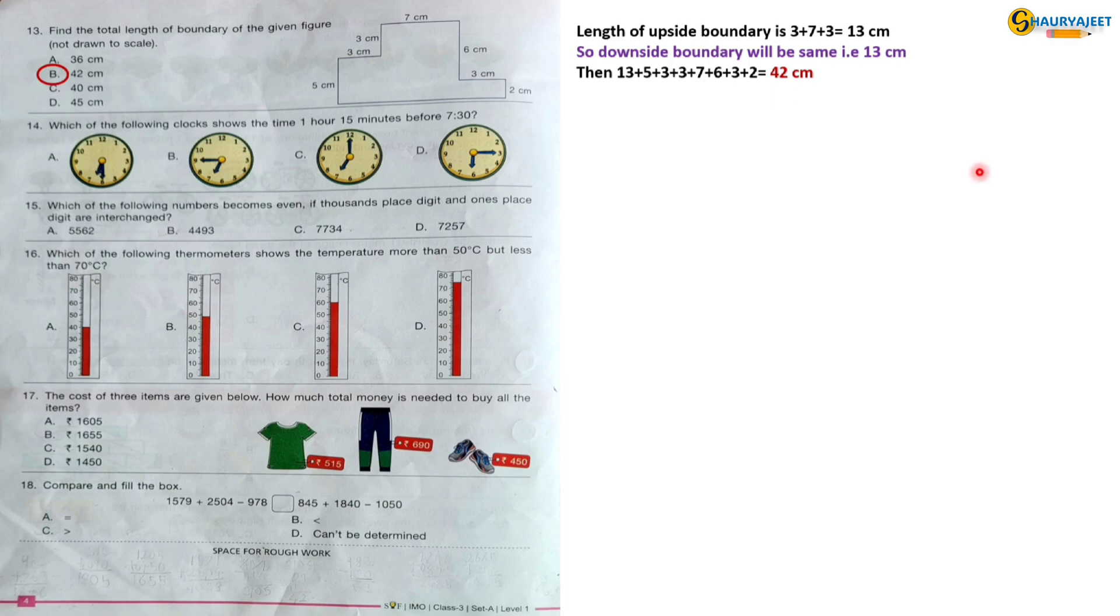Question 14: Which of the following clocks shows the time 1 hour 50 minutes before 7:30? 1 hour 50 minutes before 7:30 is 5:40. So the correct option is option D.